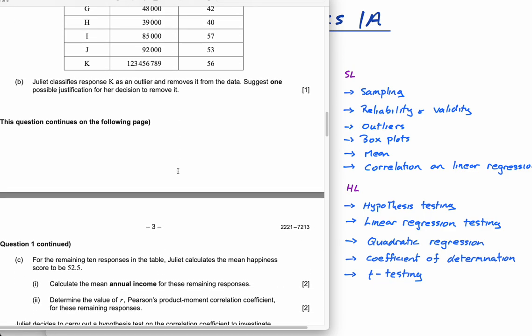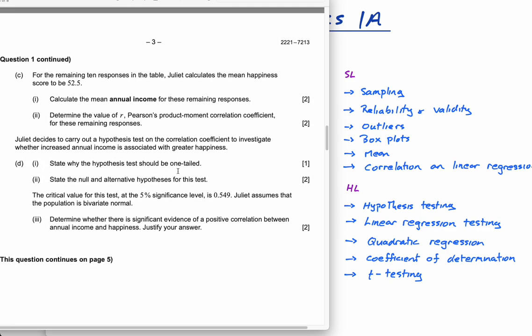Then what it says is, for the remaining 10 responses, she calculates the mean happiness score. I've put mean here, so she's calculated the mean. Then it asks you to calculate the mean for the annual income. You can calculate the mean. Nothing wrong with doing that. And then it says, determine the value of R, Pearson's product moment correlation coefficient. This is correlation and linear regression, which is something you both need to do in the standard level and higher level.